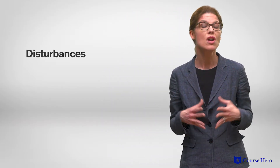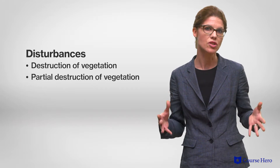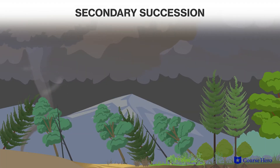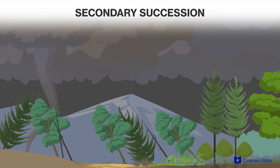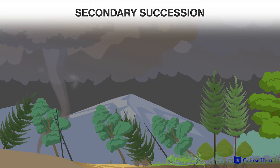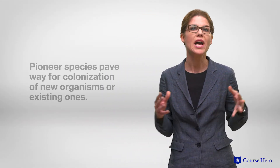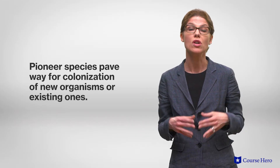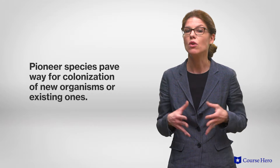Secondary succession occurs when new ecological communities are formed in an area after a disturbance removed most of the organisms, but there is still soil present. Ecological disturbances that cause secondary succession often include the destruction or partial destruction of vegetation. Disturbances such as a fire, windstorm, or flood can cause this type of destruction, but still leave some or all of the soil intact, allowing for the regrowth of communities after the disturbance. Typically, organisms that were present before the disturbance remain after the disturbance ends. Pioneer species pave the way for colonization of new organisms or recolonization of existing organisms.